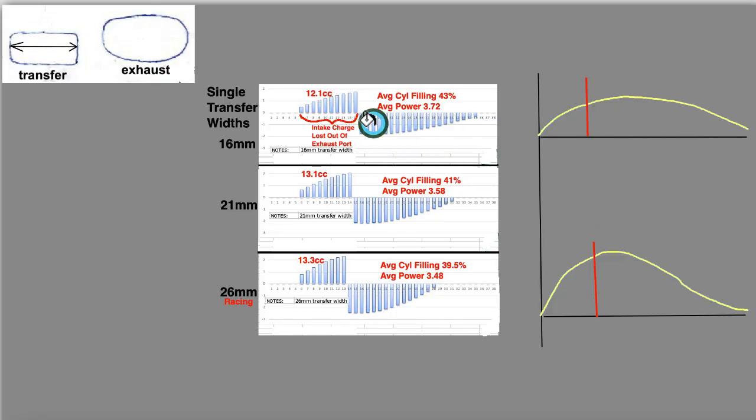I made these three graphs using my porting calculator. And it showed that the amount lost at the exhaust port with the 16 millimeter transfer width, that's one transfer on each side of my engine, caused a 12.1 cc loss at the exhaust port. With the 21 millimeter width, the loss was 13.1. With the 26 millimeter width, which gives the same ratio of transfer width to bore of a racing engine, it lost 13.3 cc's.